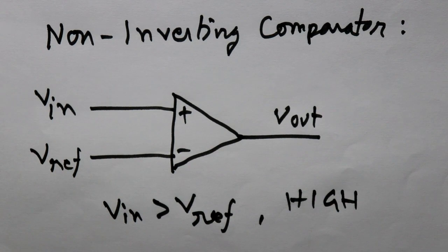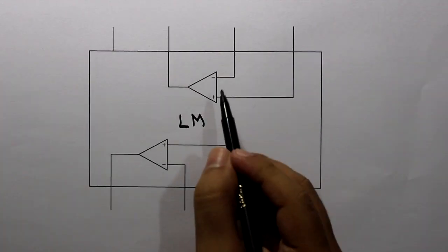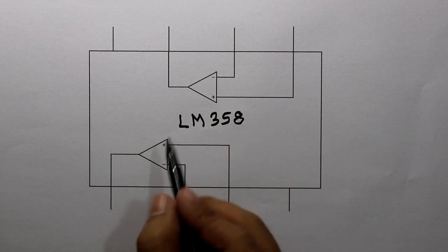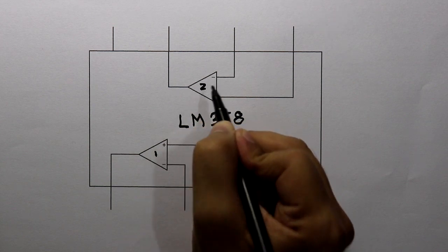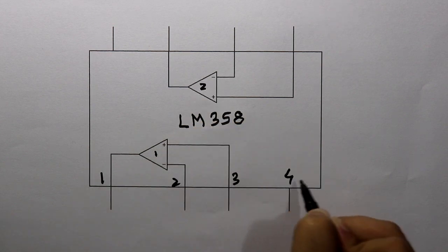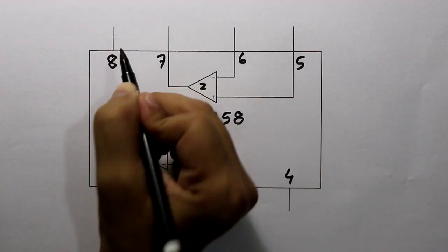Let's see this on the breadboard. Before that we need to look at the comparator IC LM358. It has two individual comparators — comparator 1 and comparator 2. Here are the pin numbers 1 through 8.